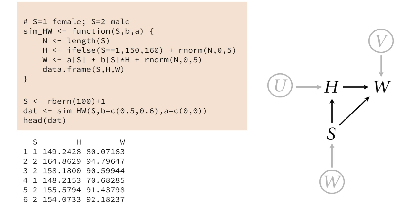Running the simulation: we make an S vector of 100 individuals drawn at random as male or female, then simulate their heights and weights. In this simulation, A is set to zero — no direct effect of sex on body weight — and there are slightly different slopes: 0.5 for women and 0.6 for men. The output is a data frame with columns for sex, height, and weight. This helps us think through what we believe about the system, develop an estimator, and then test that estimator.